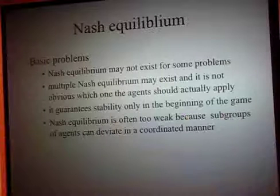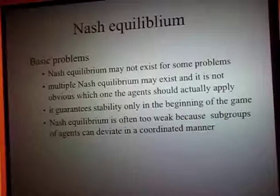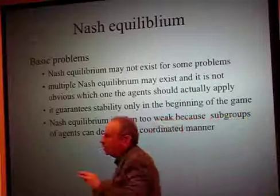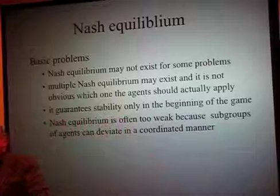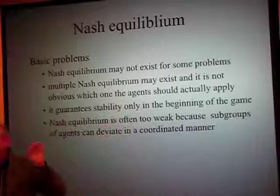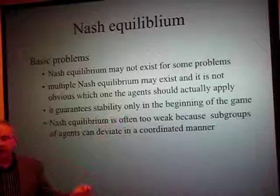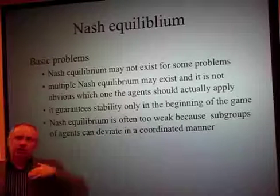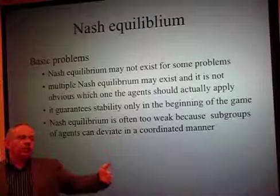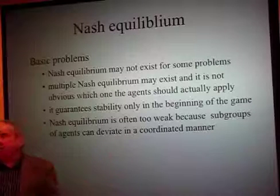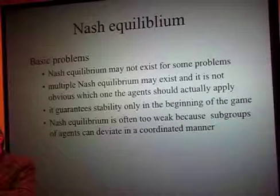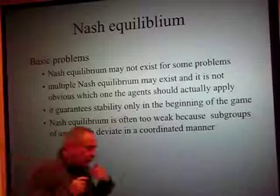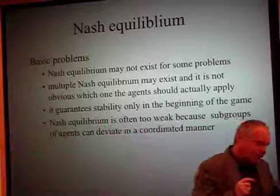I think this is a good point to take a break. Once again, what did we consider: we started with monotonic concession protocol, and in order to decide what would be a good strategy for this protocol, we went to the consideration of what are properties of strategy. Considering these properties, we arrived at the notion of Nash Equilibrium as a good property that could also be a very good property for your negotiation protocol.